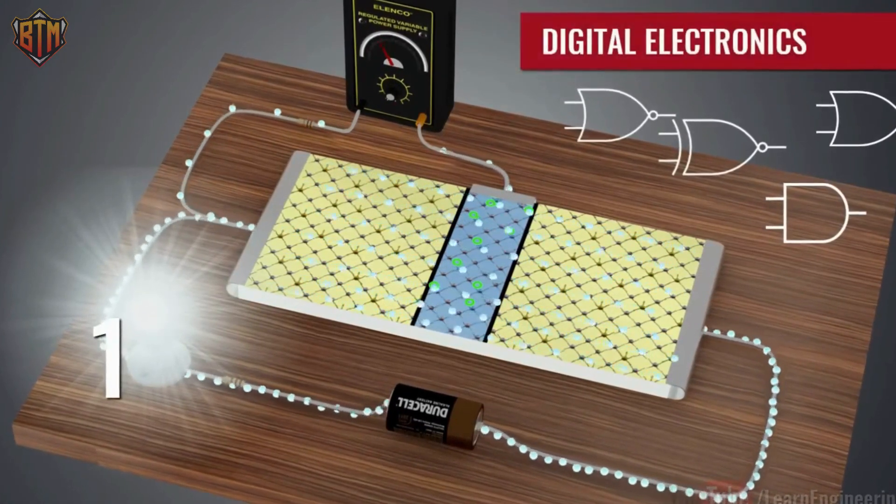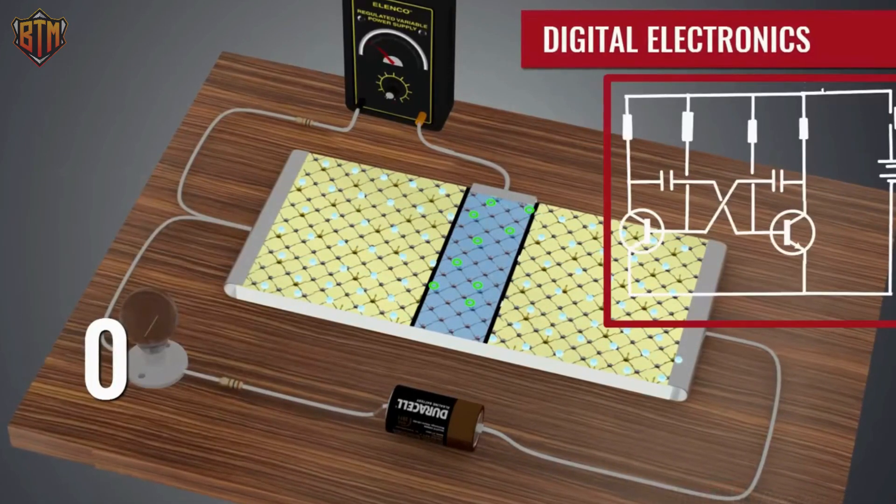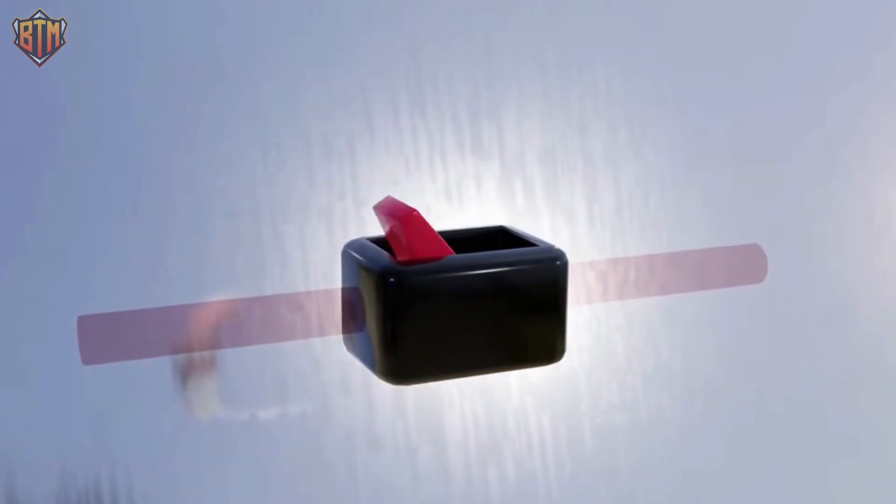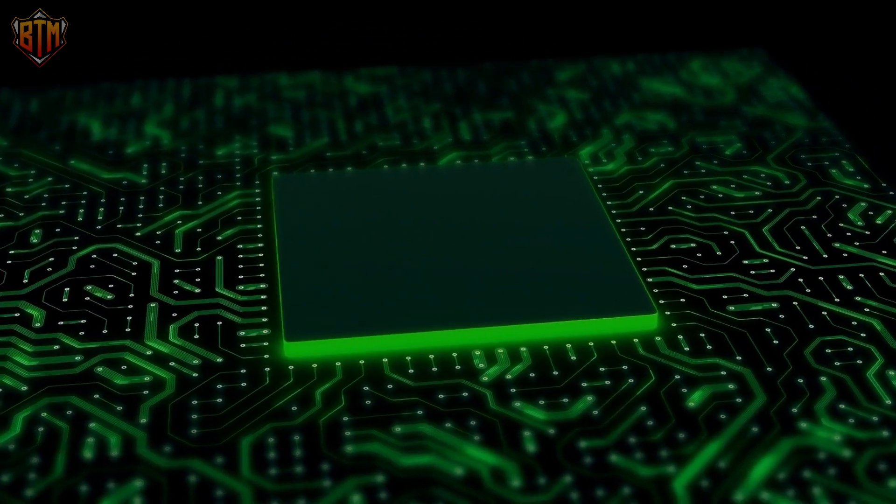Transistors can also operate as switches. A tiny electric current acting on one area of a transistor turns on a larger electric current working on another section of the transistor. In essence, this is how all computer chips operate.